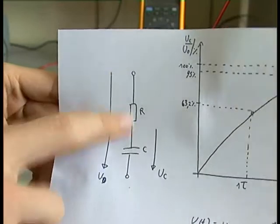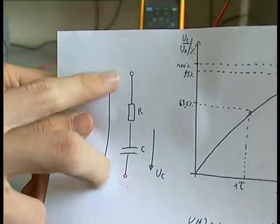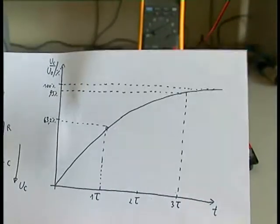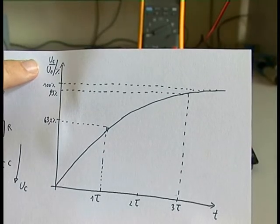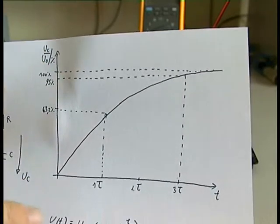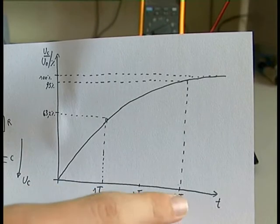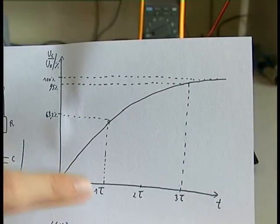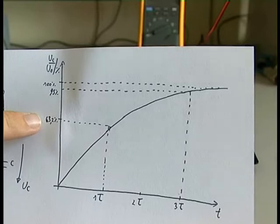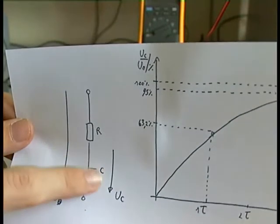First we look at this simple circuit — a series resistor and capacitor. Both have the same supply voltage, and here I have the voltage on the capacitor. Looking at this diagram, I have the voltage on the capacitor over the supply voltage in percent. Here I have my time constant called tau, and at one tau the capacitor is charged up to 63.2% — that is, 63.2% of the supply voltage.